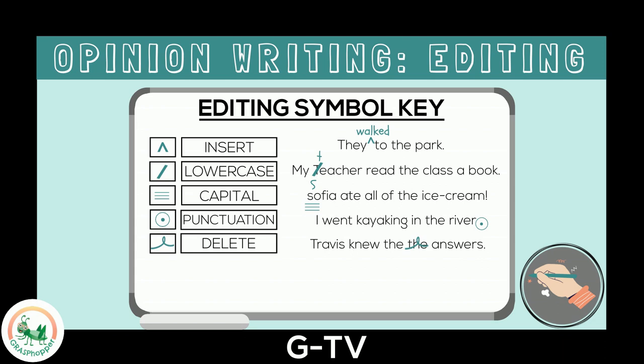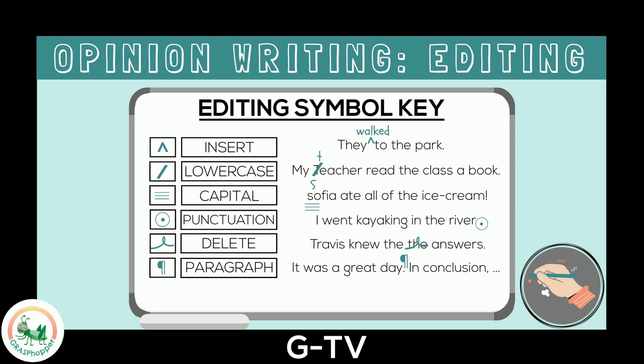The next editing symbol is to show that a new paragraph is needed. We call this editing symbol a pilcrow. For example: 'It was a great day. In conclusion...' Since the phrase 'in conclusion' is the start of the conclusion paragraph, I will write the pilcrow symbol between the sentences. When I write my next draft or final version, I will make sure the words 'in conclusion' are indented on a new line.